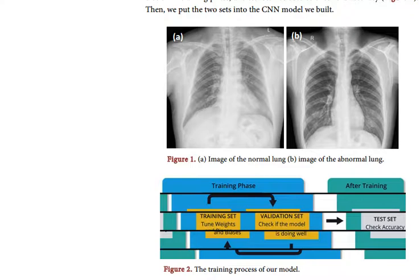Our system can contribute a lot to the efficiency and accuracy of the doctor's analysis of patient health levels. In the future, we will do more improvement to reduce the noise and increase accuracy. According to the World Health Organization, there are more than 10 million cases of tuberculosis in the world. However, the number of doctors does not match the number of patients — less than 55,000 physicians across the United States are able to treat the disease.